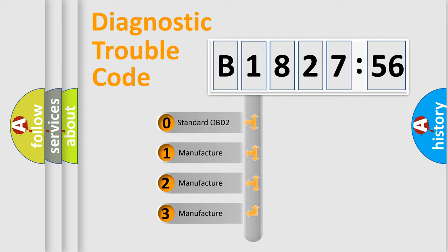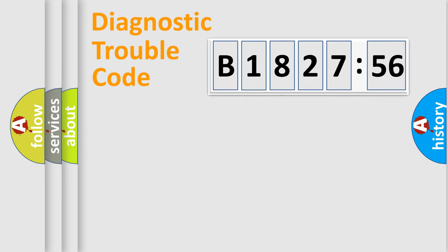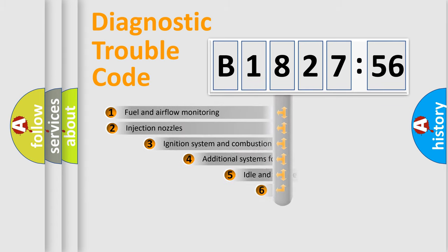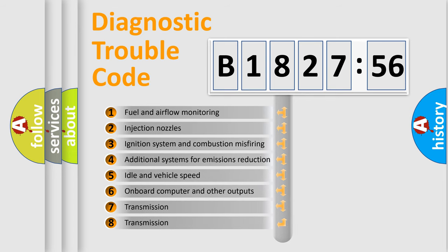This distribution is defined in the first character code. If the second character is expressed as zero, it is a standardized error. In the case of numbers 1, 2, or 3, it is a more specific expression of the car-specific error.